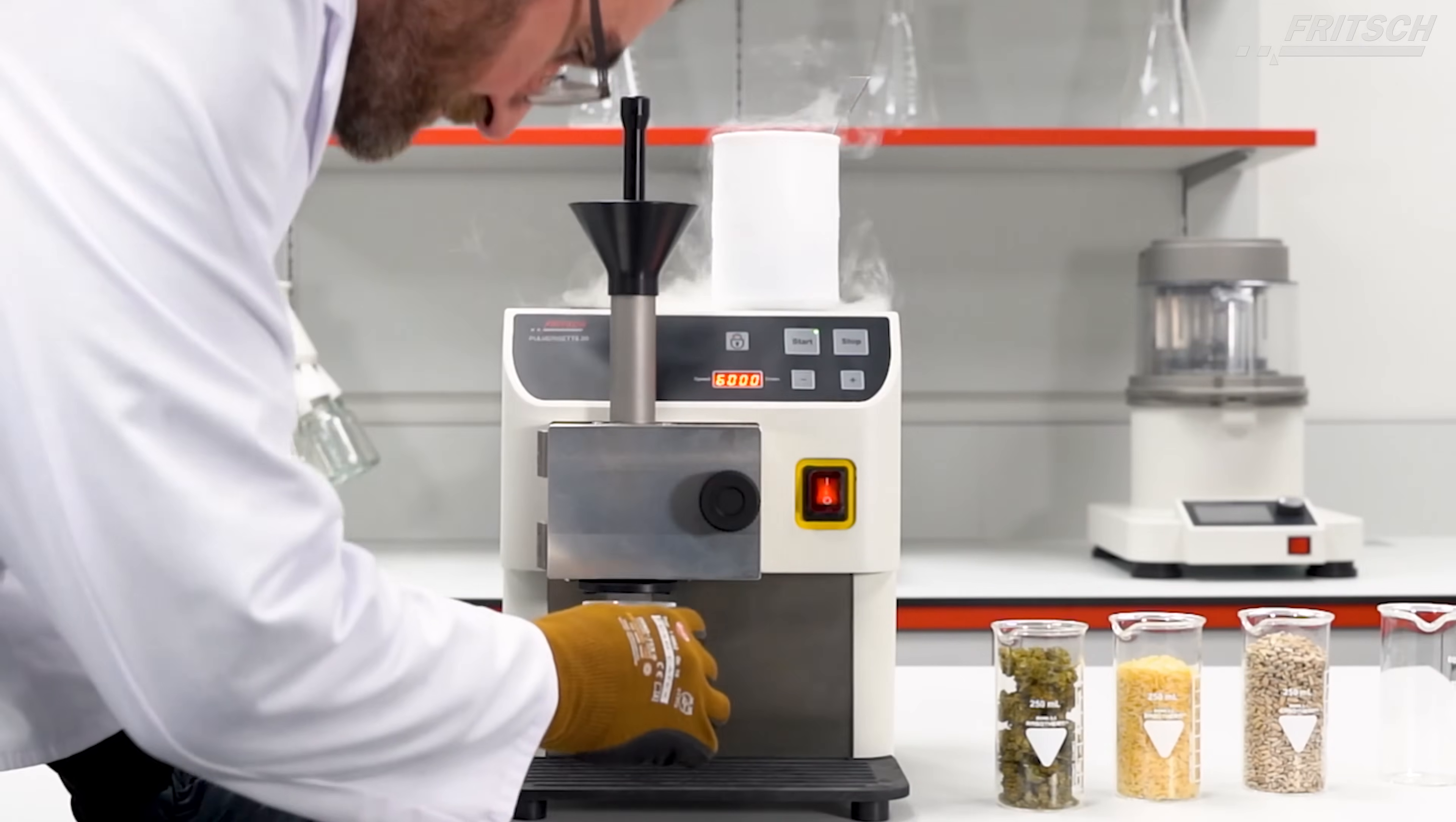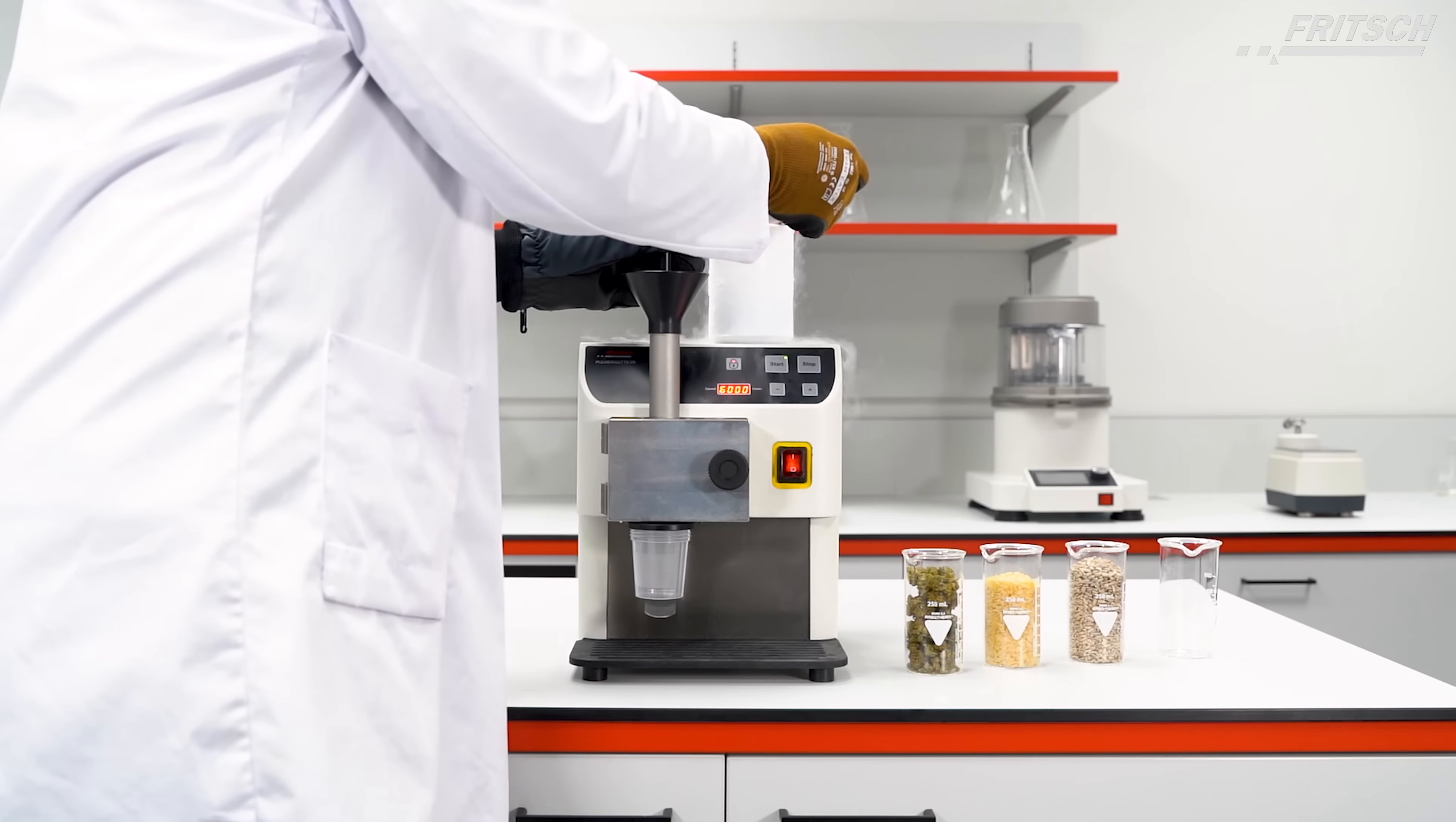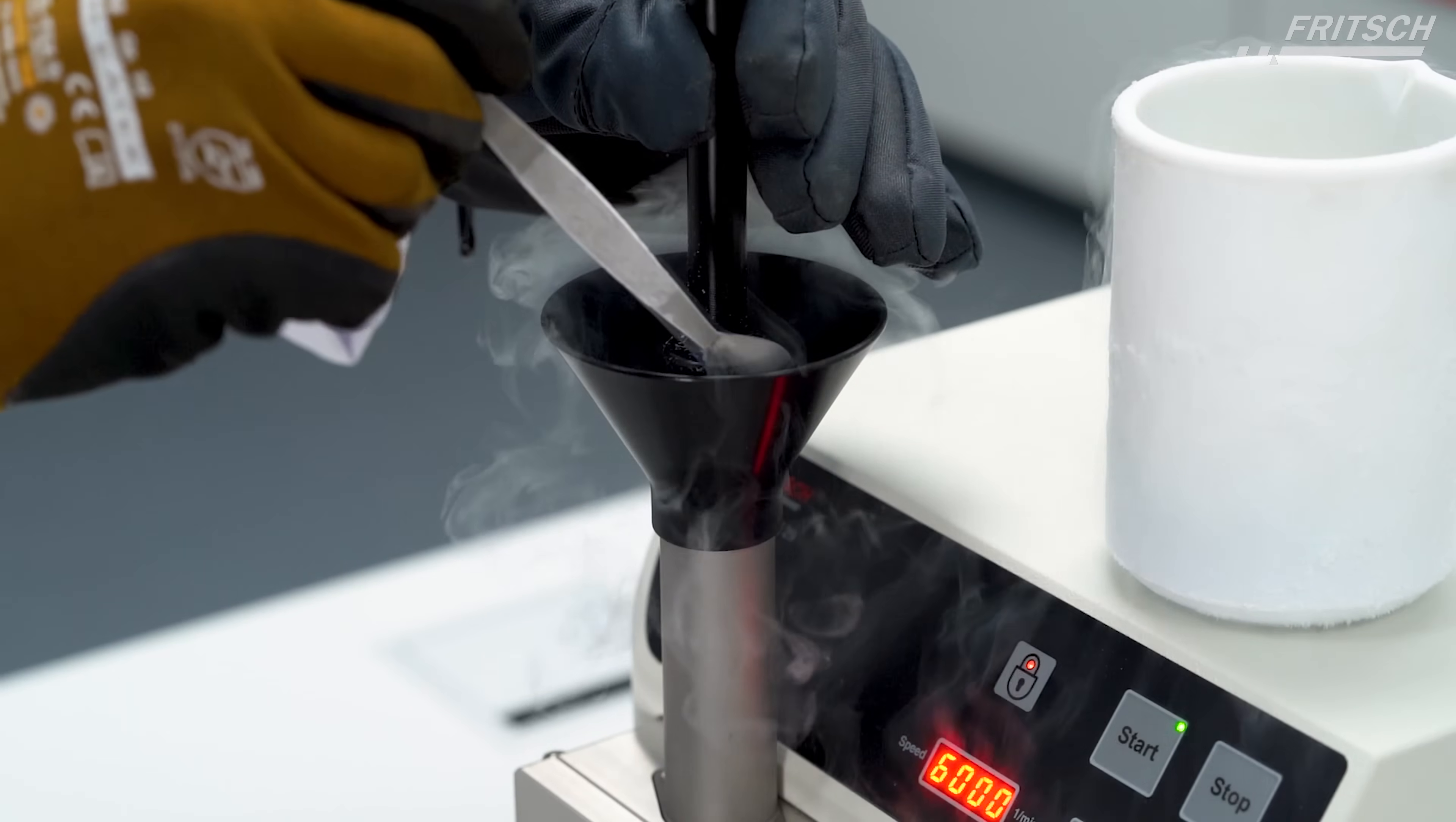Put the sample cup into the mount and the P29 is ready to mill. Carefully pour your sample into the funnel little by little and push it down slowly.